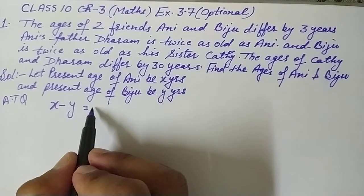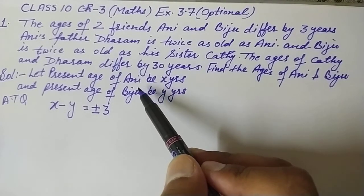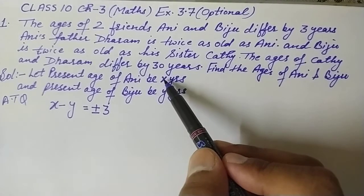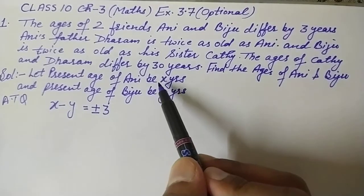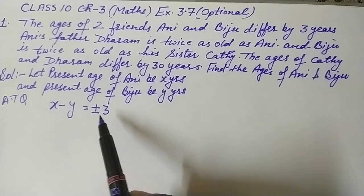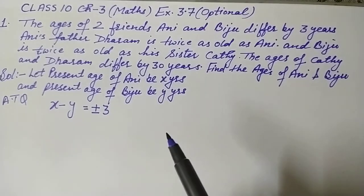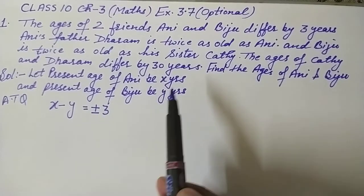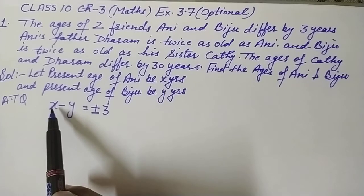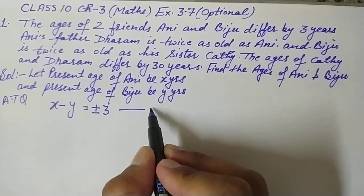It will actually be plus or minus three. Why? Because it is not given in the question whether Ani is younger or Biju is younger — which one is elder is not given. So if Ani is elder, then X minus Y equals plus three. If Ani is younger, then X minus Y equals minus three. We need to take both cases, and we call this equation number one.